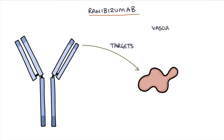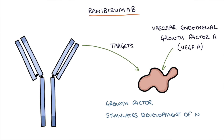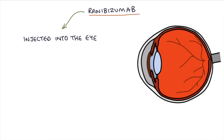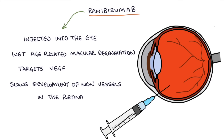Another common monoclonal antibody is ranibizumab. This targets vascular endothelial growth factor A, or VEGF-A, which is a growth factor that stimulates the development of new blood vessels. It is injected directly into the eye of patients with wet age-related macular degeneration, targeting and destroying that VEGF growth factor. This helps slow the development of new blood vessels in the retina and slow the progression of the disease.